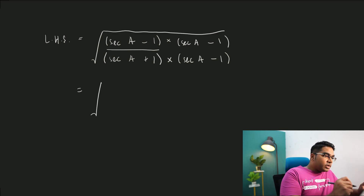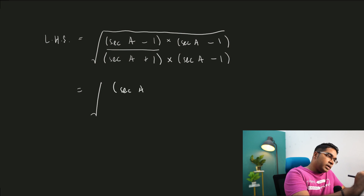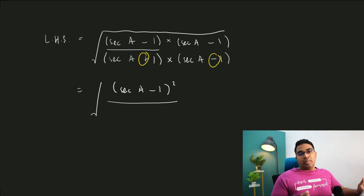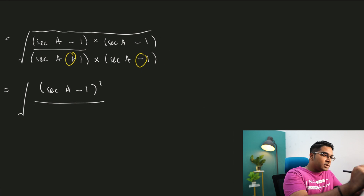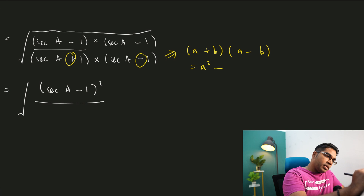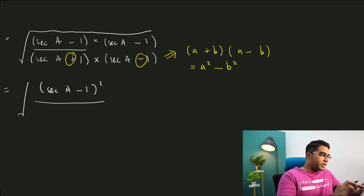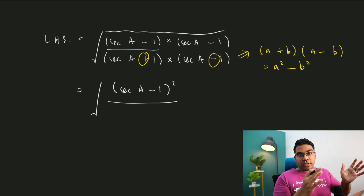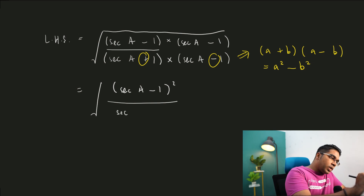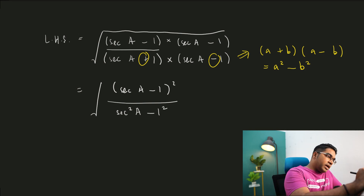After performing this operation, we get the square root of secant a minus 1 squared in the numerator. In the denominator, we have a plus b times a minus b form, which expands to a² minus b². So in the numerator we have secant a minus 1 all squared, and in the denominator we have secant squared a minus 1 squared — which simplifies to just secant squared a minus 1.